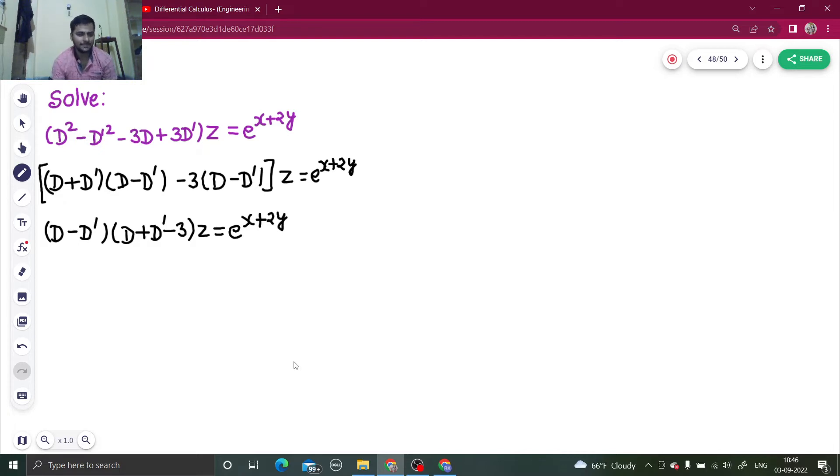What is our next step? Our next step is to compare each factor with d minus m d dash minus a. So comparing each factor with d minus m d dash minus a. If I compare the first factor, I will get the value of m1 and a1.